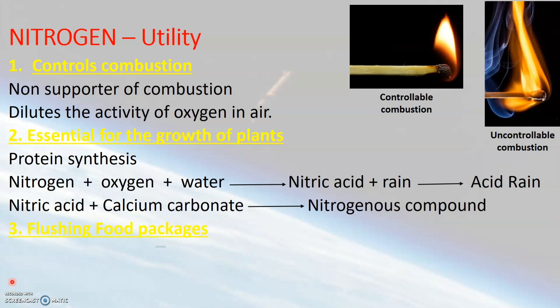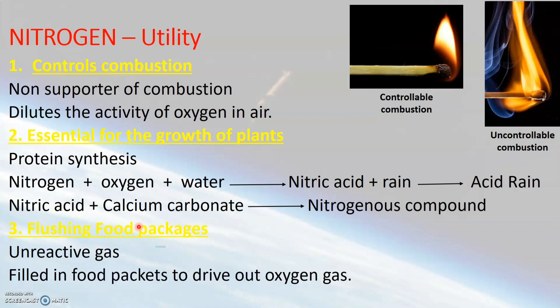Nitrogen gas is used for flushing food packets. Since nitrogen is an unreactive and chemically inert gas, it does not react with food items. When food packets are filled with nitrogen gas, it helps in preventing or reducing the growth of bacteria present in the food packet. Flushing food packets with nitrogen actually drives out oxygen gas from the packet, thus reducing or preventing bacterial growth. Therefore, nitrogen gas is used for flushing food packages.